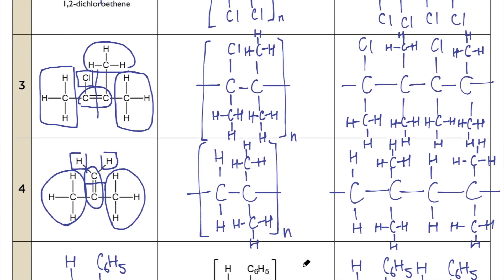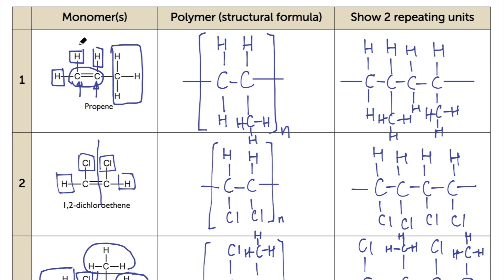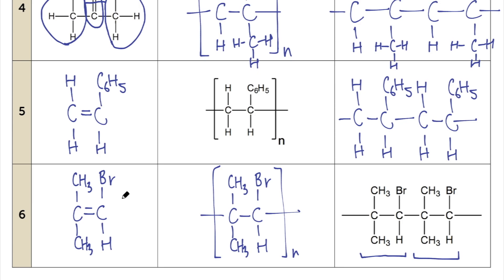There are two more things to go through. The first is naming of polymers. For question one, the monomer is propene, so the name of the polymer is polypropene. We simply put the word 'poly' in front of the name of the monomer. So for question two, the name of the polymer is poly(1,2-dichloroethene). For question five, the monomer is actually styrene, and therefore the name of the polymer is polystyrene — the material found in many food packaging.